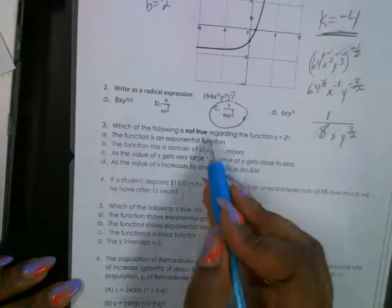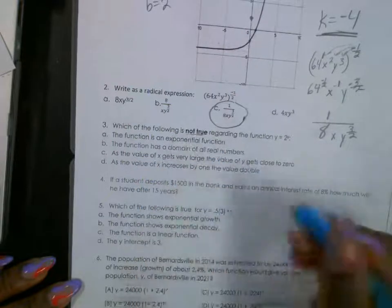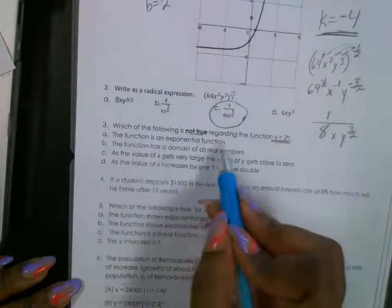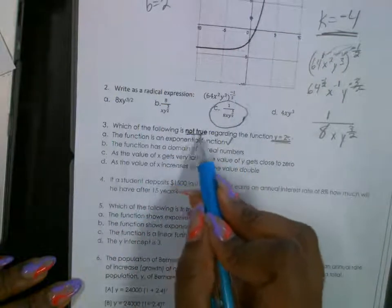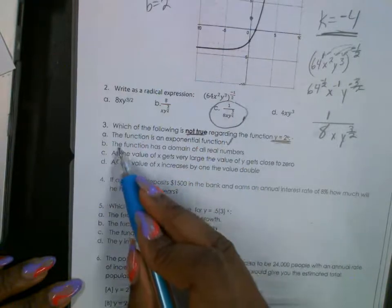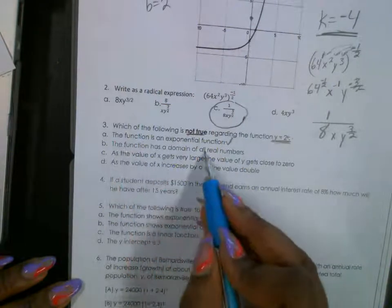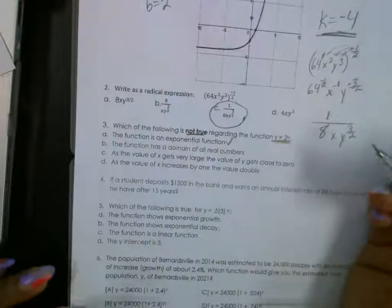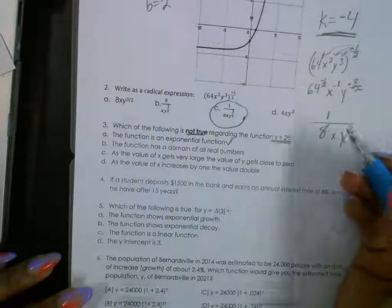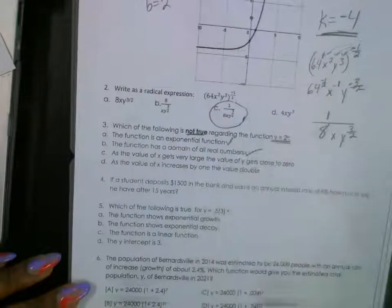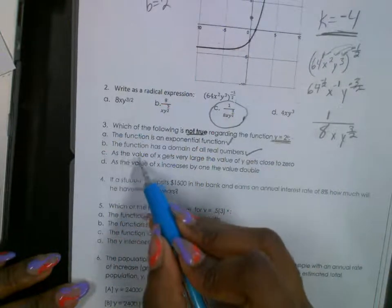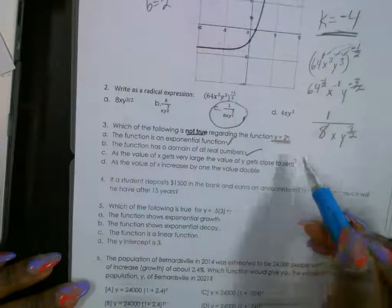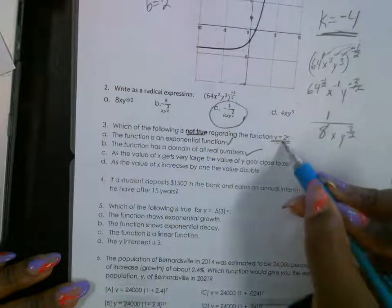All right. Number three, which of the following is not true? All right. This is an exponential function. It's two to the x power. Okay. So this is an exponential function. That's true. It says which one's not true. This is true. The function has a domain of all real numbers. Okay. You can put any number in for x. That is true. You can put any number in for x. All right. So it's all real numbers. For c, as the value of x gets larger, the y gets closer to zero. That means it will be decreasing. This is increasing.